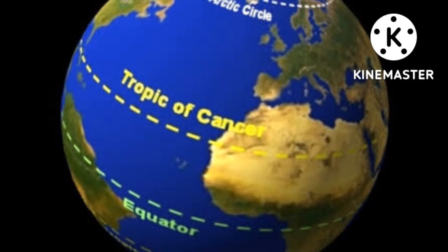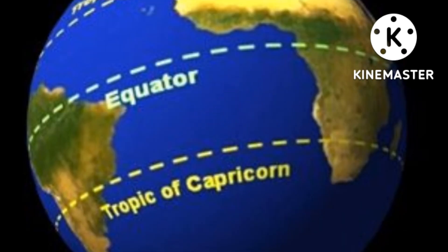The tropic of cancer is the most northern latitude on the earth where the sun can appear directly overhead. The tropic of capricorn is the most southern latitude on the earth where the sun can appear directly overhead.